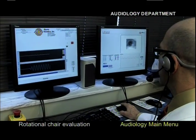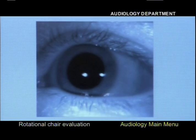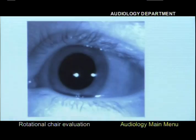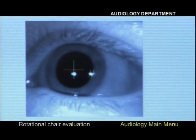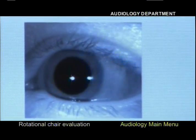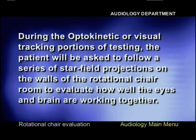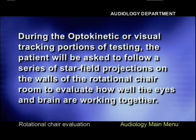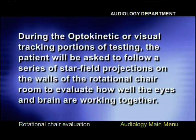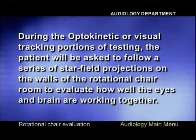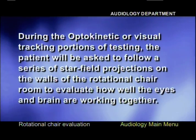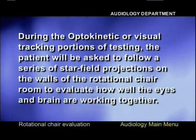Testing in a darkened room allows a more accurate measure of central nervous system function by measuring the patient's ability to visually track moving objects. Another series of tests performed while seated in the rotational chair involves visually tracking or following a small point of light as it moves on the wall. During the optokinetic or visual tracking portions of testing, the patient will be asked to follow a series of star field projections on the walls of the rotational chair room to evaluate how well the eyes and brain are working together.